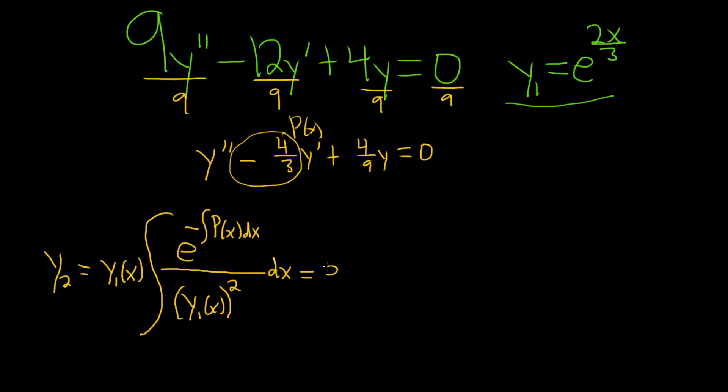So this is e to the 2x over 3, that's our y1, integral. E, and then it's already negative. See, big P is negative 4 thirds, so it'll become positive.